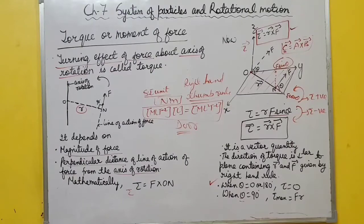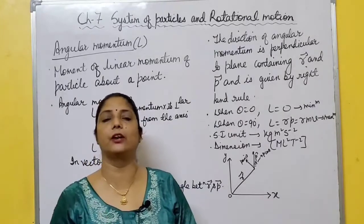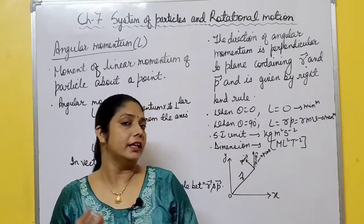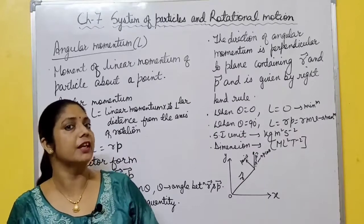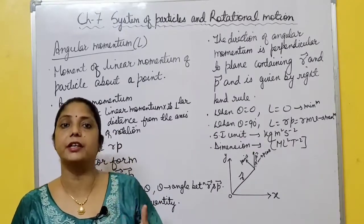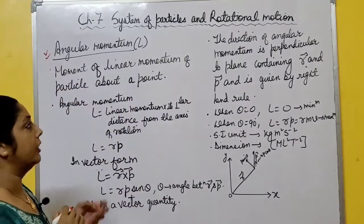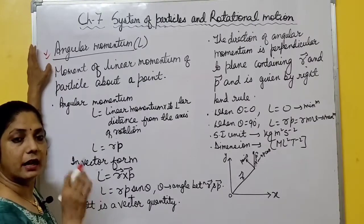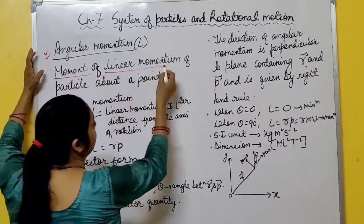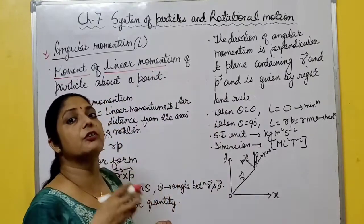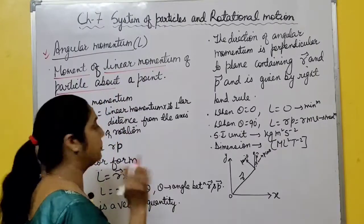Angular momentum is the rotational analogy of linear momentum. In linear motion, linear momentum is the amount of translatory motion possessed by a body. In the same way, in rotational motion, the amount of turning motion possessed by a body is measured by angular momentum. It is the moment of linear momentum - just like torque is the moment of force. Angular momentum is moment of linear momentum of a particle about a point.